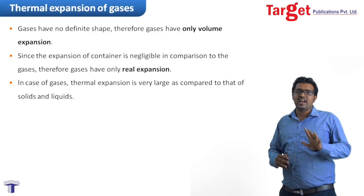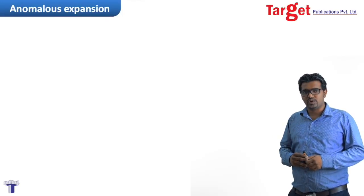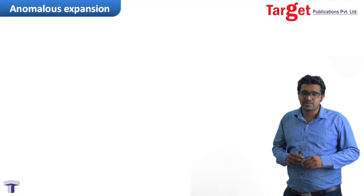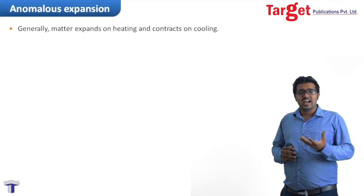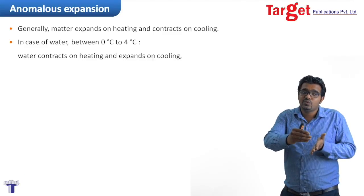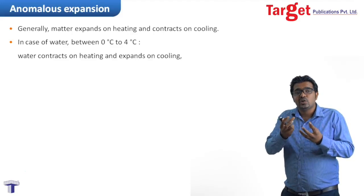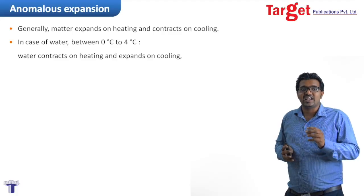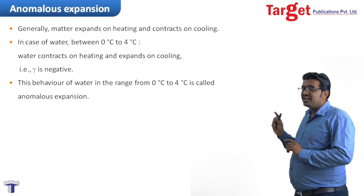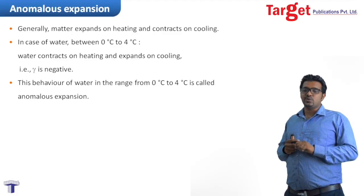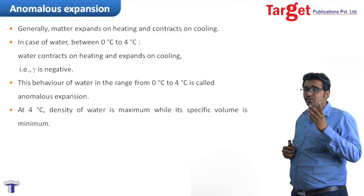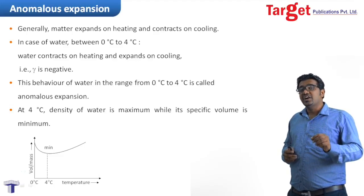Moving ahead, we have a topic known as Anomalous Behavior of Water — Anomalous Expansion to be more precise. Matter, when heated, expands and when cooled, contracts. But in the case of water, from 0°C to 4°C, when heated it contracts and when cooled it expands. This is the behavior of water from 0°C to 4°C, where gamma is negative. This behavior is known as Anomalous Expansion. In this case, the density of water is maximum at 4°C and its volume is minimum at 4°C.